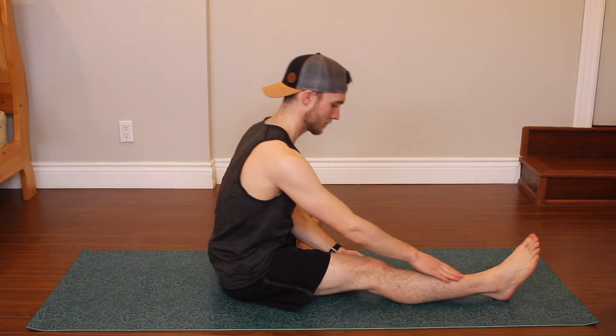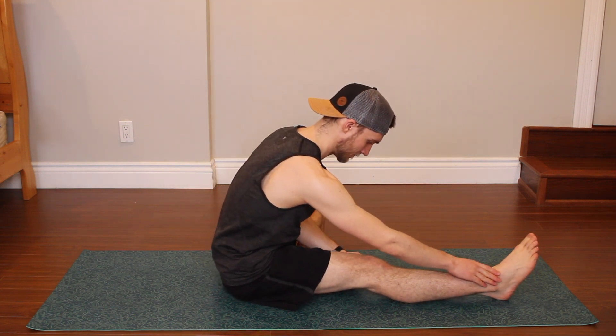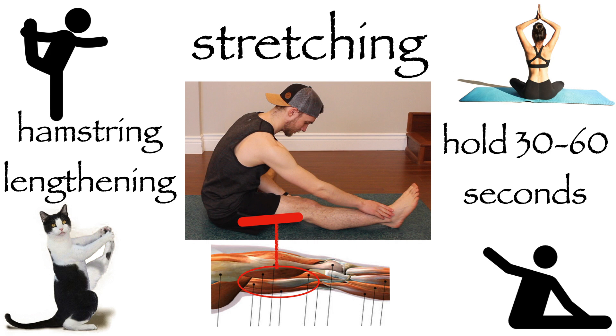On the flip side, let's look at a stretch — the modified hurdler stretch. Stretch is right in the name, so you already know it is a stretch, but let's talk about what makes it a stretching exercise. The muscles being targeted are the hamstrings muscle group. They rest on the back of the thigh and are lengthened when we lean forwards with a straight knee. We then hold this exercise for 30 to 60 seconds at a time. The muscle being targeted is being lengthened and we're holding the position for an extended period — that is what makes this a stretching exercise for the hamstrings.